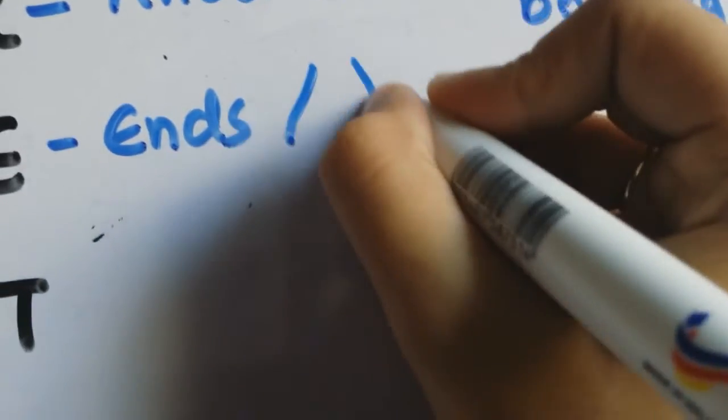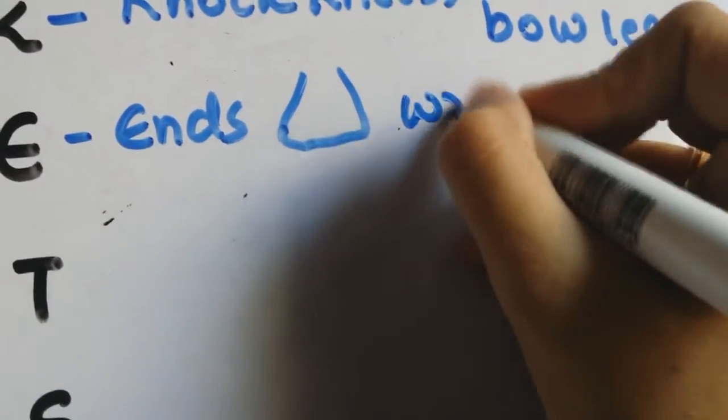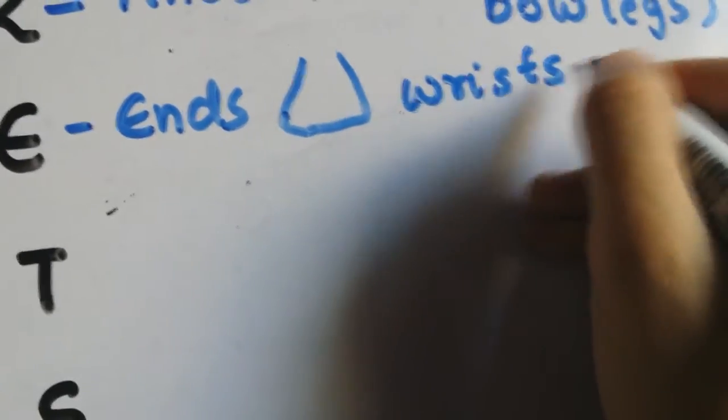E is for ends of long bones. Basically what happens is the ends of long bones become very wide and this is seen in children who are younger, like about six to nine months of age, and this is very prominent in the wrist and knees.